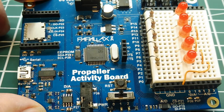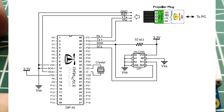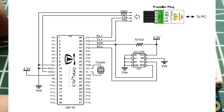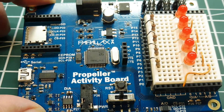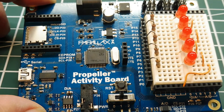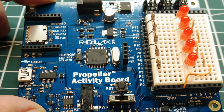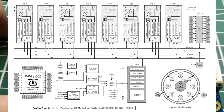You can get the Propeller in a 40-pin DIP package, and you can get the EEPROM in an 8-pin DIP package, so you can breadboard this whole circuit. The main feature of the Propeller is that it's a multi-core microcontroller, which means it has 8 separate 32-bit microcontrollers on board.